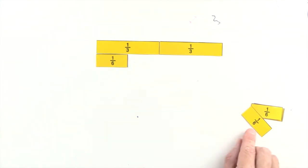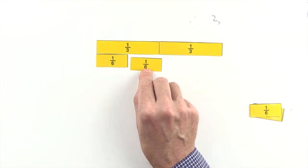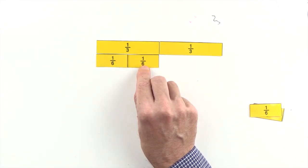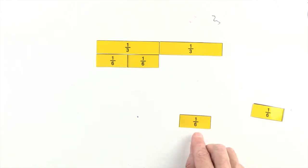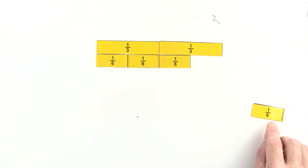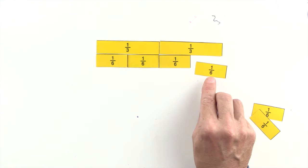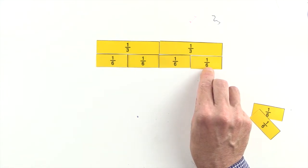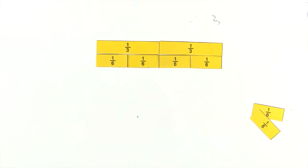1 sixth and 3 sixths are less than 2 thirds. And 4 sixths are equal to 2 thirds, giving us an equivalent fraction.